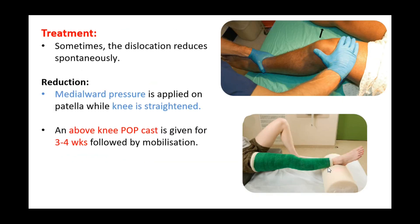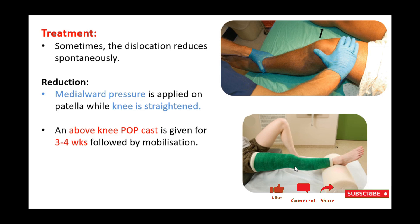Treatment: sometimes the dislocation reduces spontaneously, but most of the time reduction needs to be done. For reduction, medial pressure is applied by the surgeon on the patella while the knee is straightened. Once reduced, an above-knee plaster of Paris cast is given to the patient for around three to four weeks, followed by mobilization.